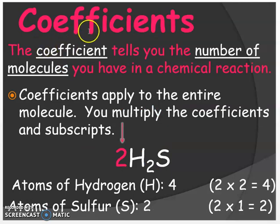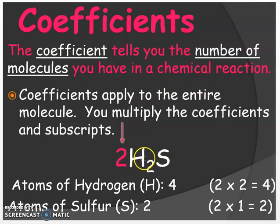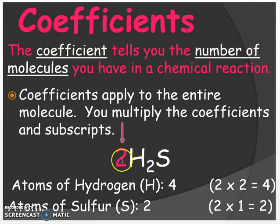The second rule is the coefficient rule. The coefficient tells you the number of molecules you have in a chemical reaction, and coefficients apply to the entire molecule — you multiply the coefficient by the subscripts. So if H2S has a coefficient of 2, that means we have two molecules of this formula. To count individual atoms, multiply the coefficient by the subscript: 2 times 2 gives four hydrogens, and 2 times 1 gives two sulfurs.